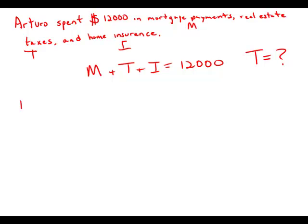Statement number one tells us last year the total amount that Arturo spent on real estate taxes and home insurance was 33 and a third percent of the amount that he spent on mortgage payments. So taxes plus insurance equals one third, which is the fraction one third of mortgage payments.